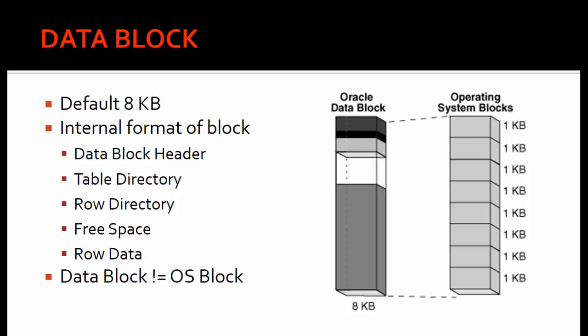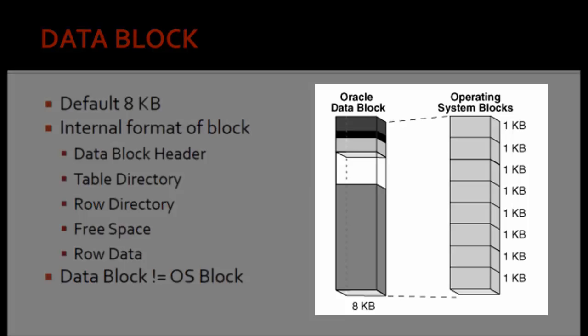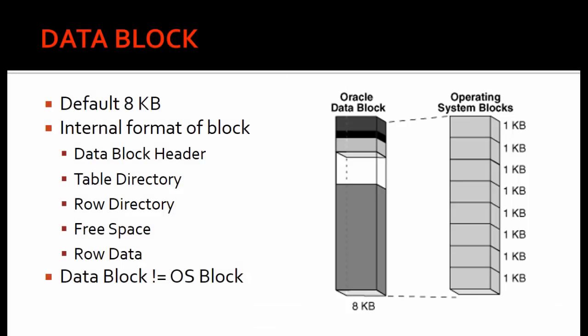How does it help Oracle to fetch data very fast? The Oracle data block stores information about the OS-level data blocks where the data is stored. When Oracle needs something, it calls the data block, which internally has the details of the OS-level physical storage on the hard disk. That is how it becomes easy for Oracle to get 8 KB of data in one shot. We have the option to increase this value, but generally everyone uses 8 KB data blocks.